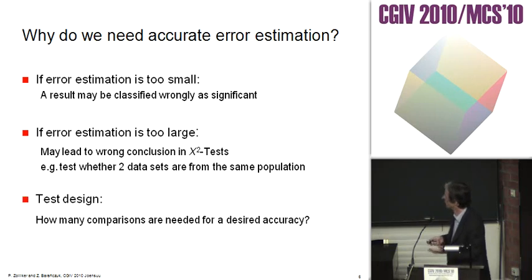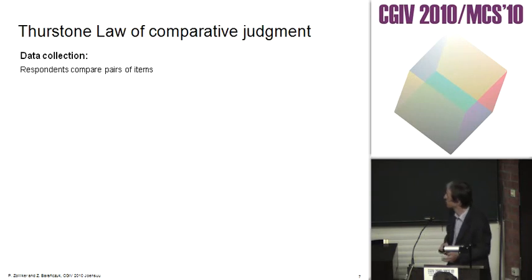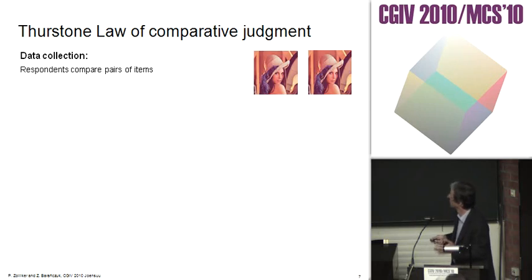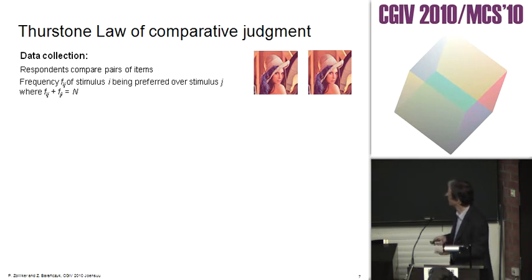Also in test design, if you know the error estimation, you can estimate how many comparisons you need for a desired accuracy. Now we summarize Thurston's law of comparative judgment. The study has a data collection where respondents compare pairs of items, and we have a frequency matrix F_ij.